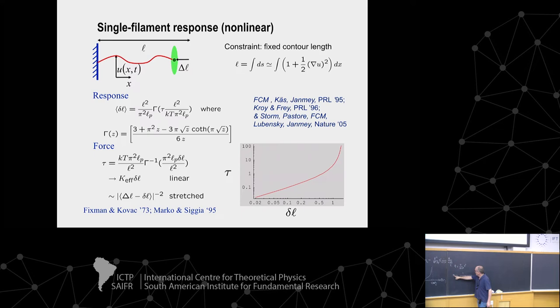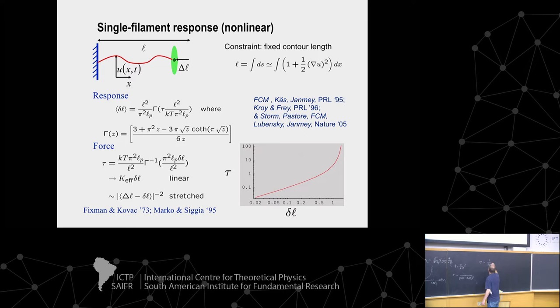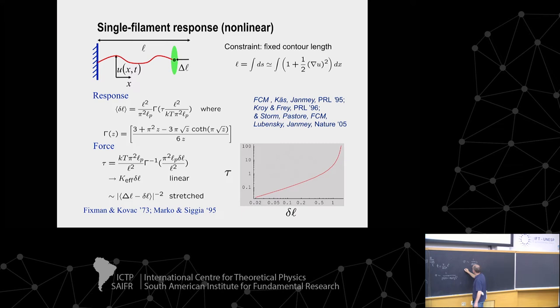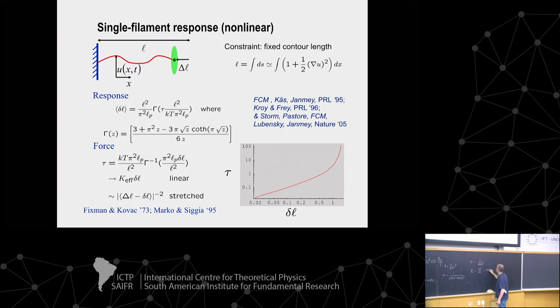If the tension goes like the inverse square of the extension, that suggests the stress goes like the inverse square of the strain. If I take the derivative — the tangent modulus — then since stress goes like delta gamma to the minus two, the derivative goes like delta gamma to the minus three, which is also stress to the three-halves power. So if I plot stiffness versus stress, I get a three-halves power.